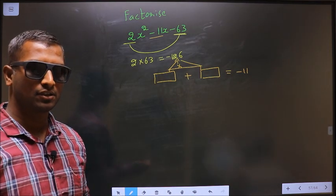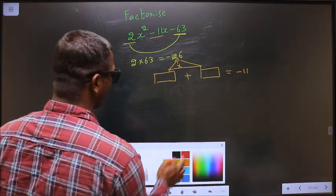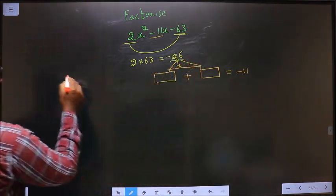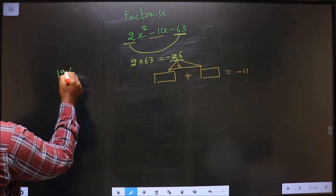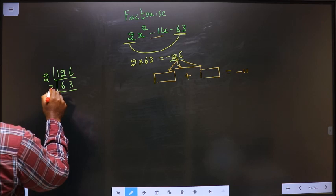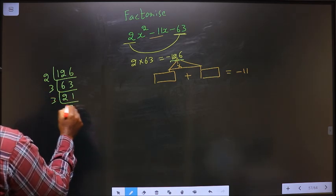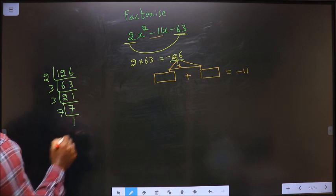So now to get those 2 numbers, we should take LCM of 126. Starting with 2. 2, 6, 2, 3s. Now 3. 3, 2s, 3, 1s. Again 3. 7. 7 and 1.